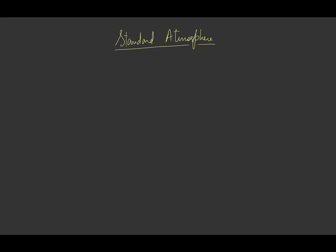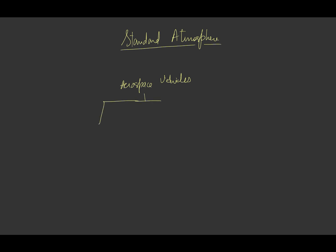Hello friends. In this video we are going to learn about standard atmosphere. As we talk about aerospace vehicles, we know that they are basically two types. Number one is atmospheric vehicles, which are basically aeroplanes, helicopters, or all those vehicles which fly within Earth's atmosphere.